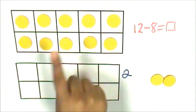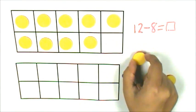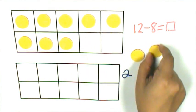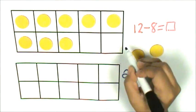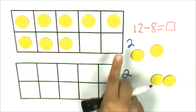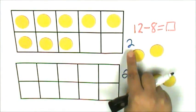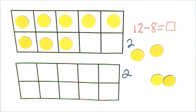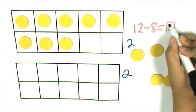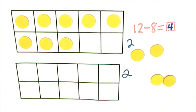Now I have 10. And if I take 2 away, I have 8: 5, 6, 7, 8. 2 and 2 is 4, and that means 12 minus 8 equals 4.